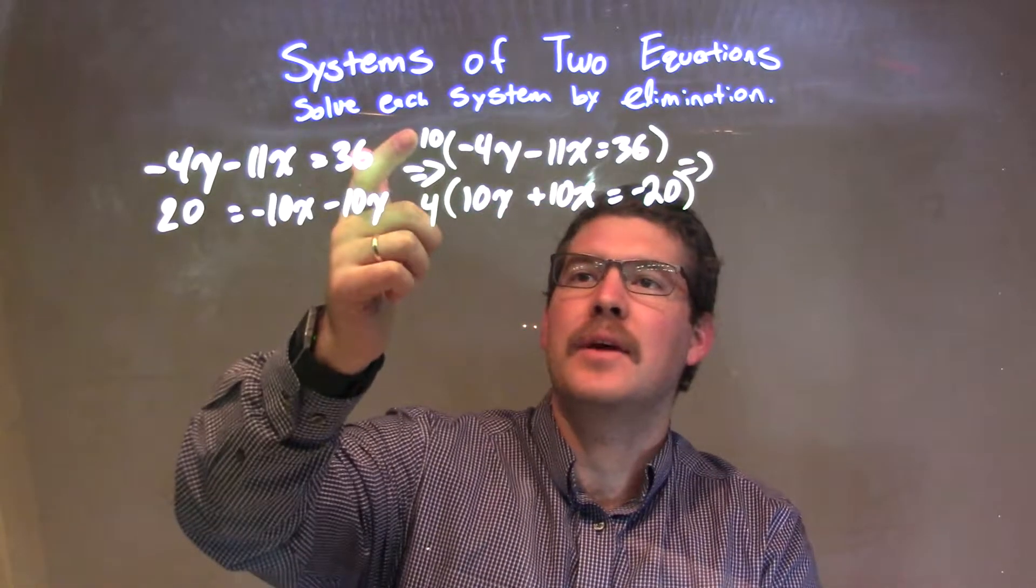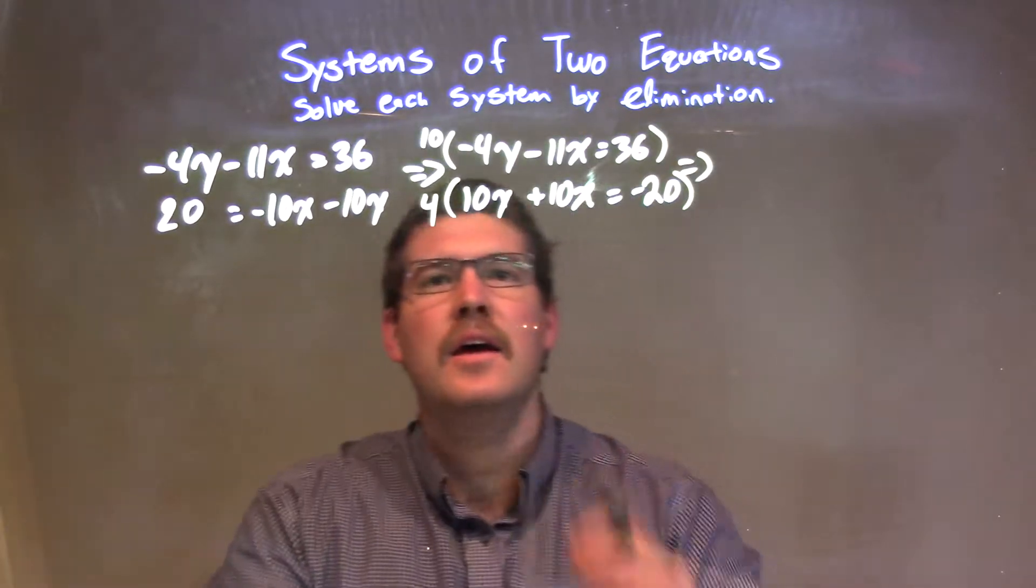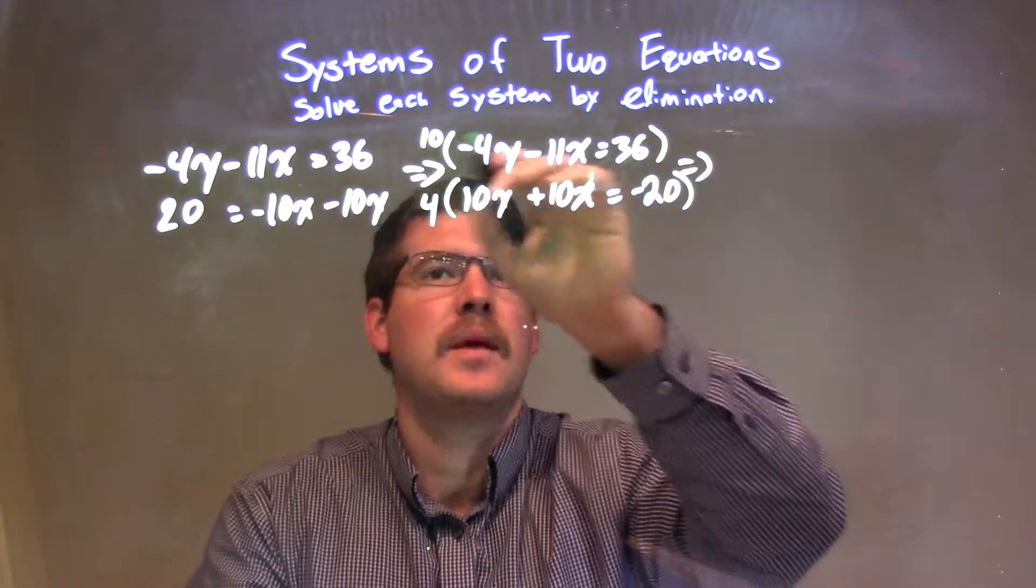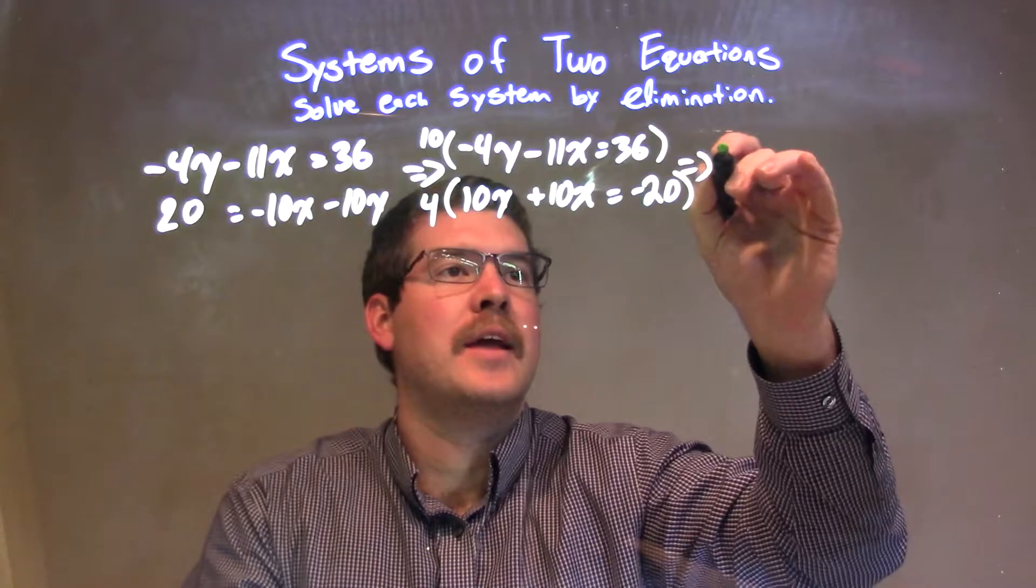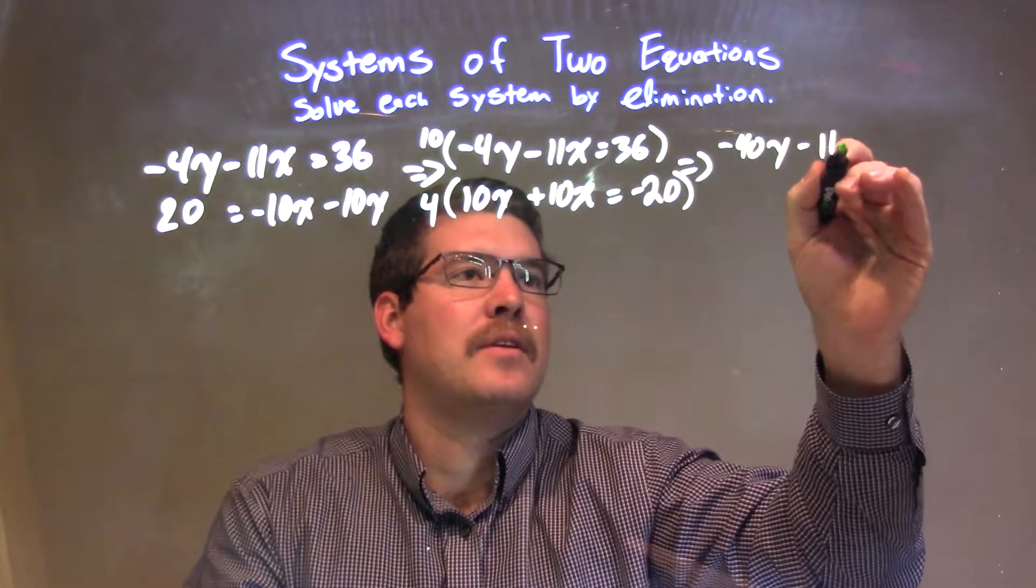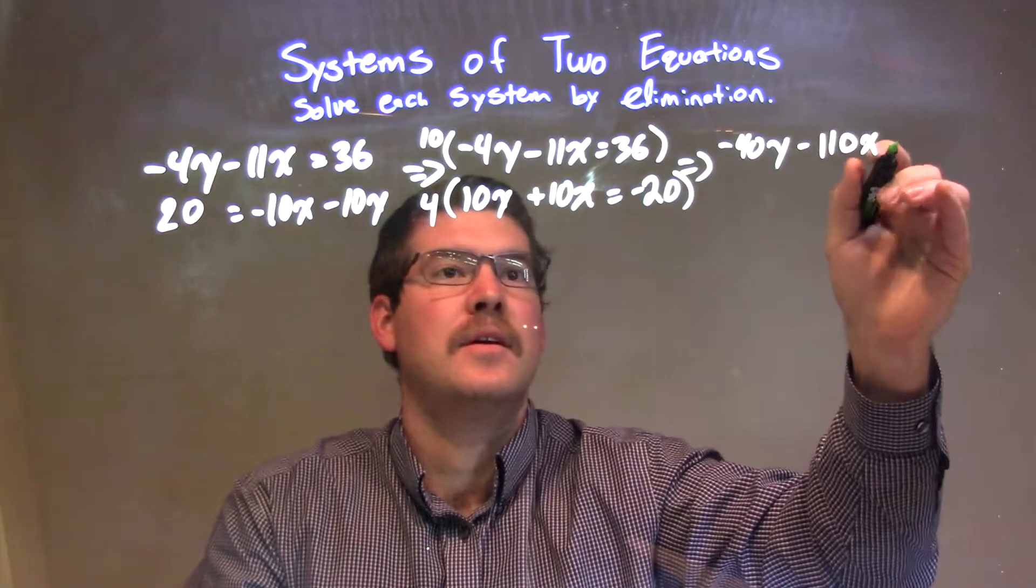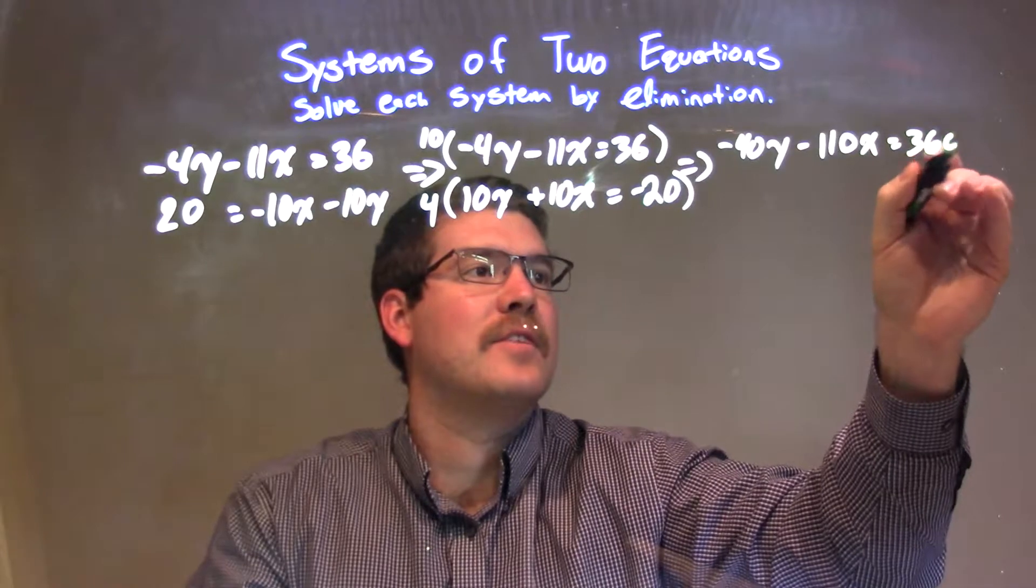That will ensure, because 10 times negative 4, or 10 times 4 is the same thing as 4 times 10, that the y's will be eliminated. 10 times negative 4y is negative 40y, and 10 times negative 11 is negative 110x, and that equals 360.